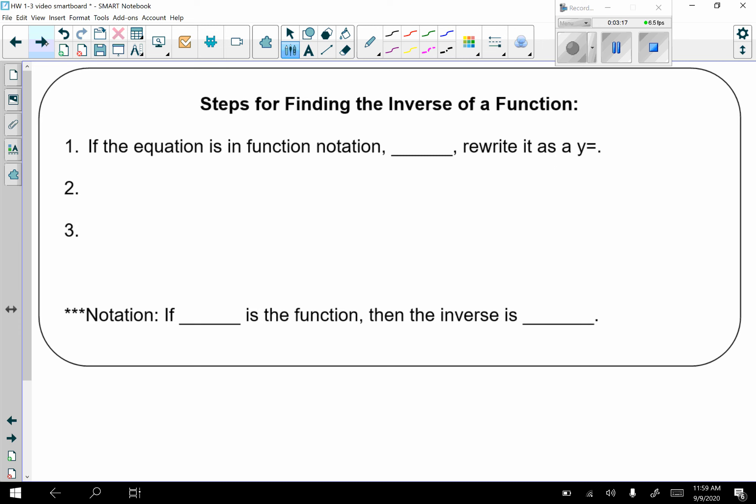So our steps for finding an inverse. Number 1, if the equation is in function notation, which would be something like f(x) or g(x), k(x), anything like that, we're going to rewrite it as a y equals. Then you're going to switch x and y. And then your last step is to solve for y. Just in terms of notation, if f(x) is the function, then its inverse is f with this exponent of negative 1, x. And we call this f inverse of x.